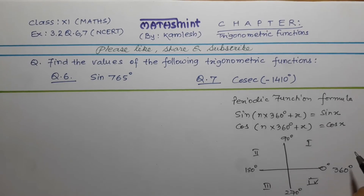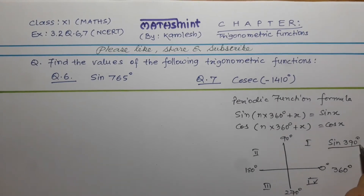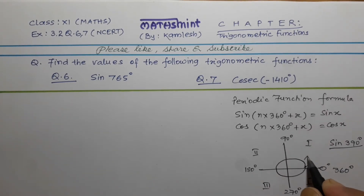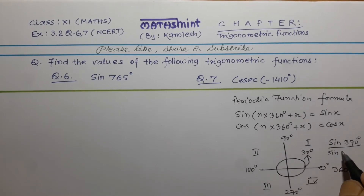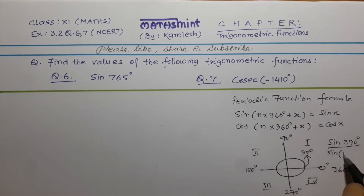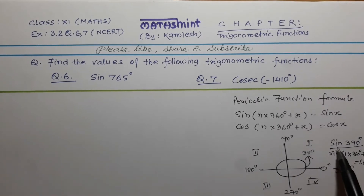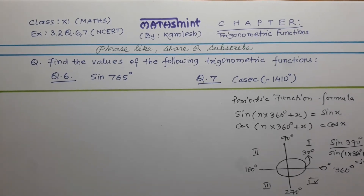Suppose we have to find the value of sin 390°. For one rotation it is 360° and 30° more. So it will be sin(1 × 360° + 30°), and the remainder is 30°. So sin 390° equals sin 30°. In likewise manner, we are solving this question.